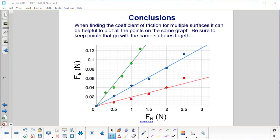When finding the coefficient of friction for multiple surfaces, it can be helpful to plot all the points on the same graph. Be sure to keep points that go together with the same surfaces. One way of doing it, certainly, is just plot them in different colors. Another way, you could use different shapes like X's or little boxes or dots. Or you can just do one at a time and keep track of it, and then make sure you label each one with what surface and object you had.